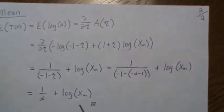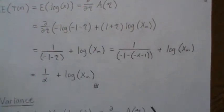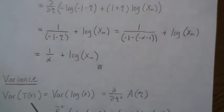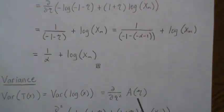Now the variance of our sufficient statistic is the second derivative of our log partition with respect to eta. We already found the derivative once.